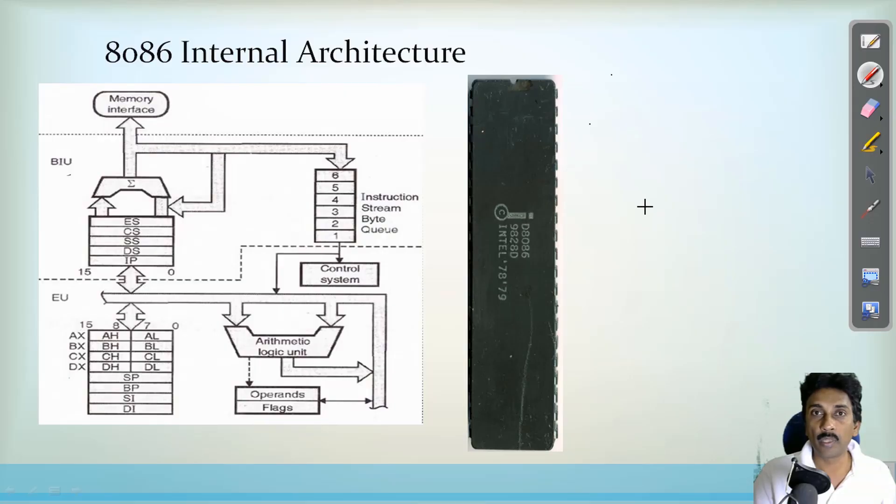Before going to know about the internal architecture in detail, let's see here the 8086 IC. This is the 8086 IC which comprises of 40 pins. This dual inline package means that this is the first pin and second pin, like that the pins are going to be increased up to 20th at this side.